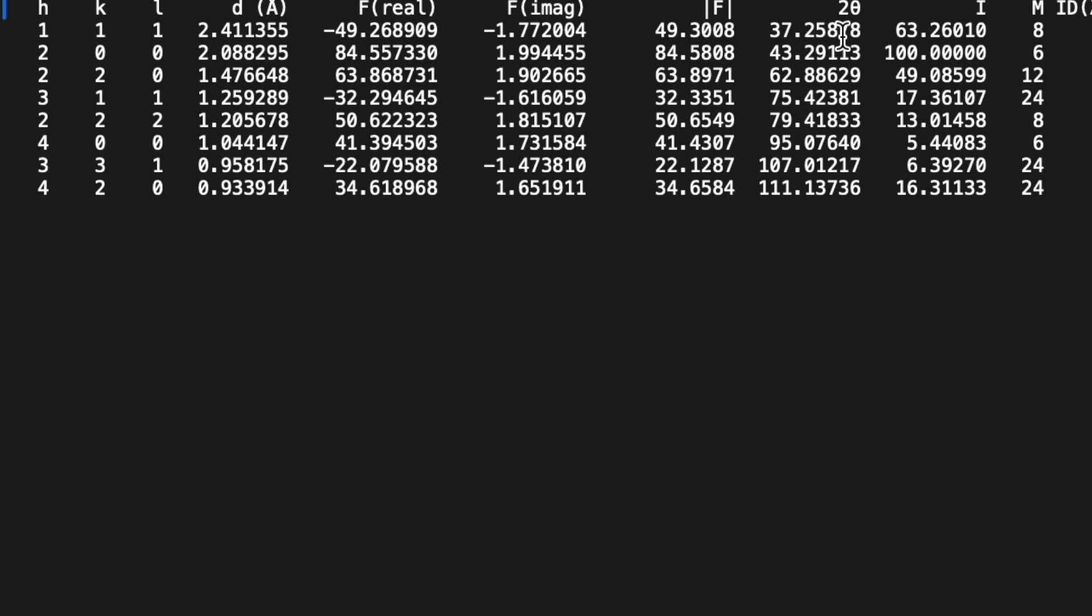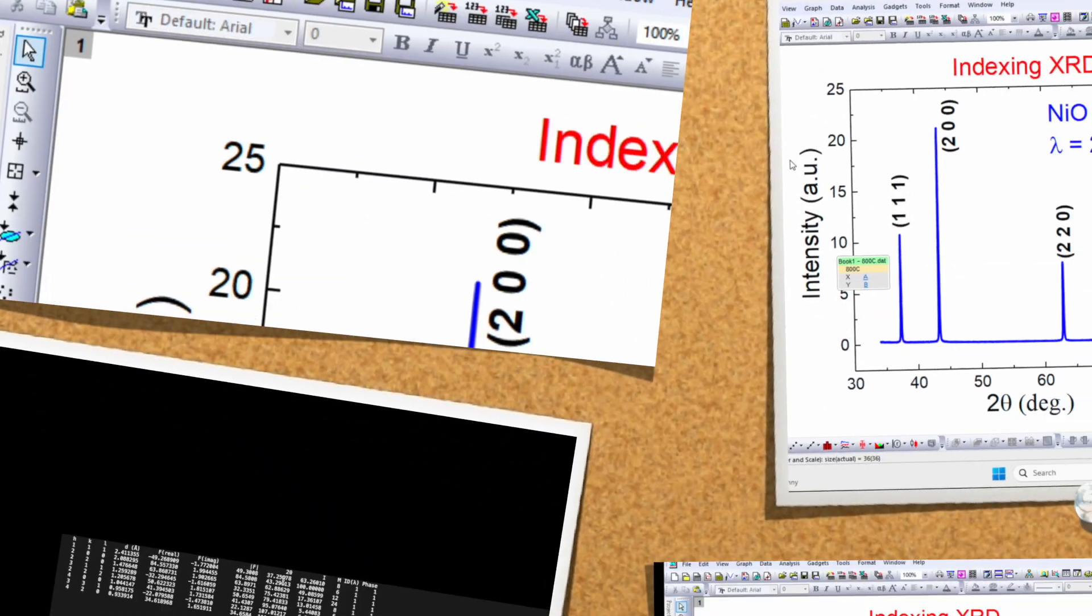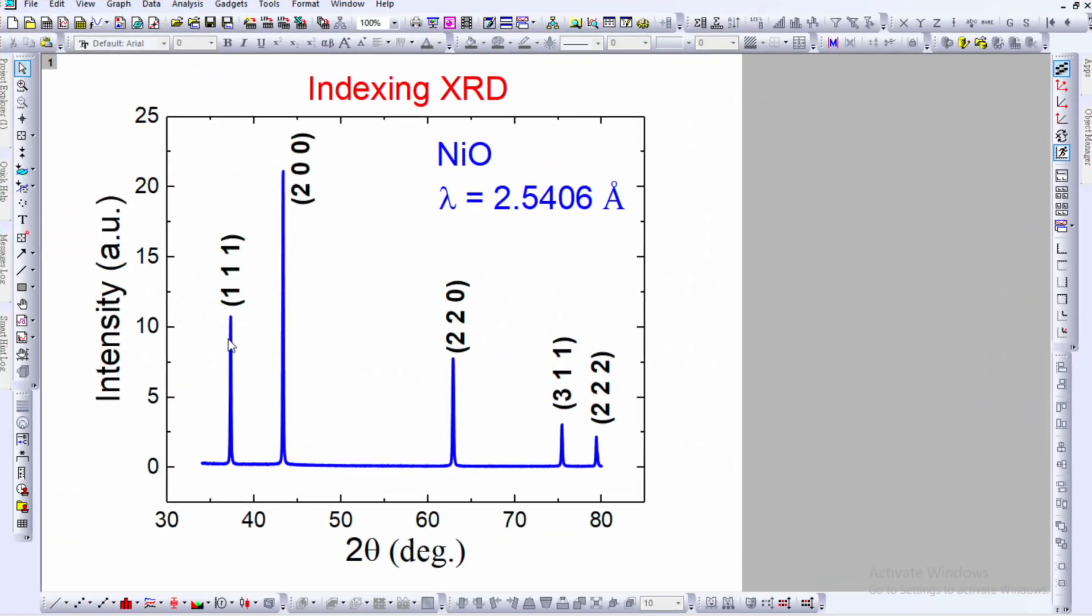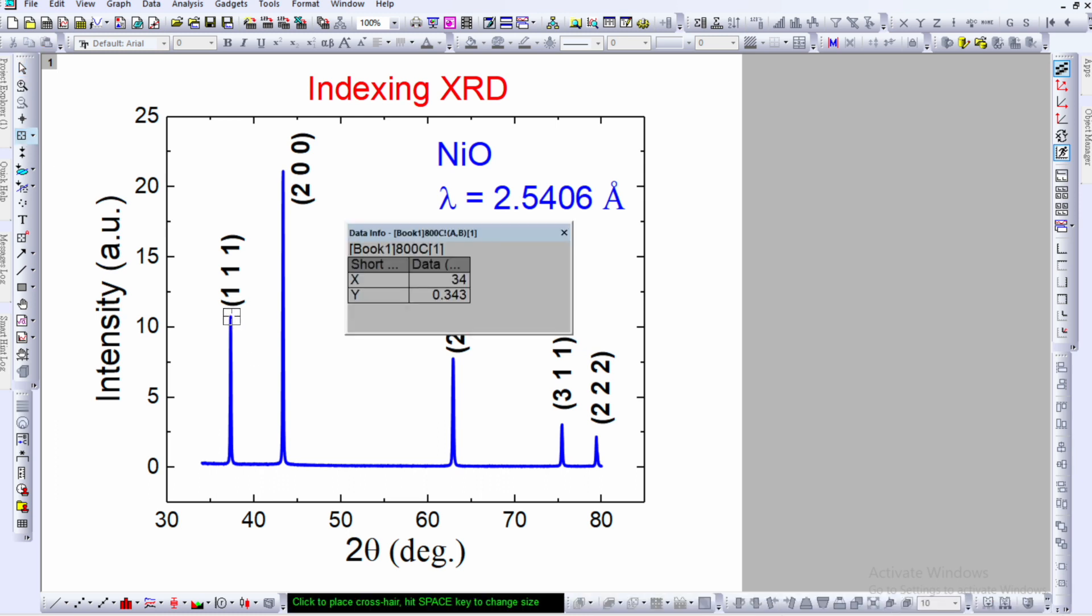Now what you can do: go back to the Origin software and compare these values. For example, click on the data reader and click on the point.